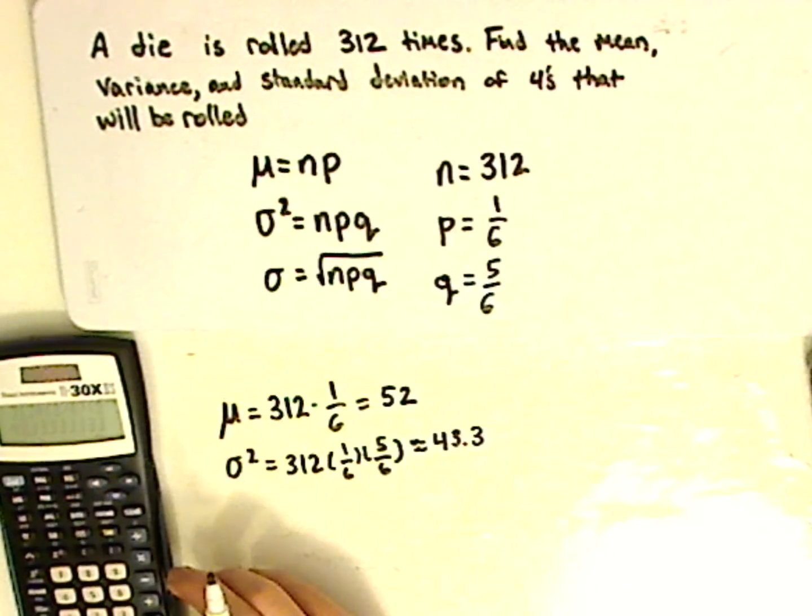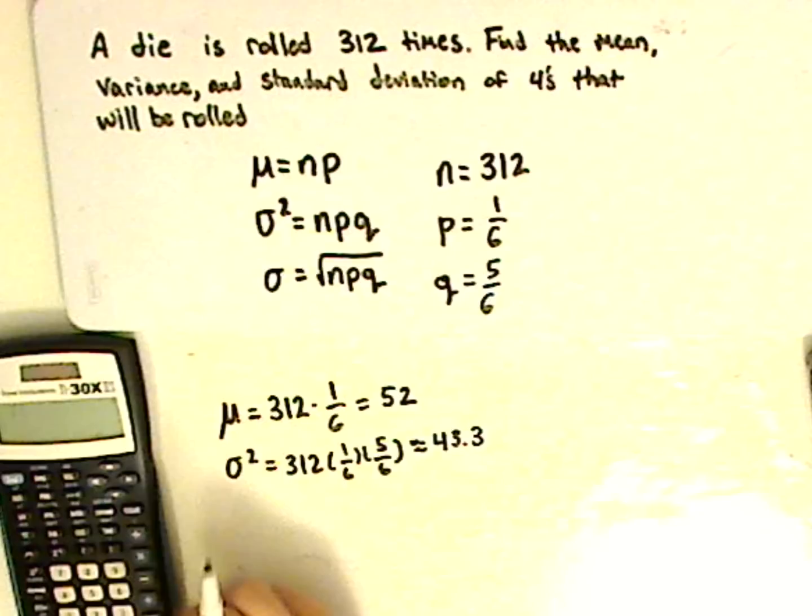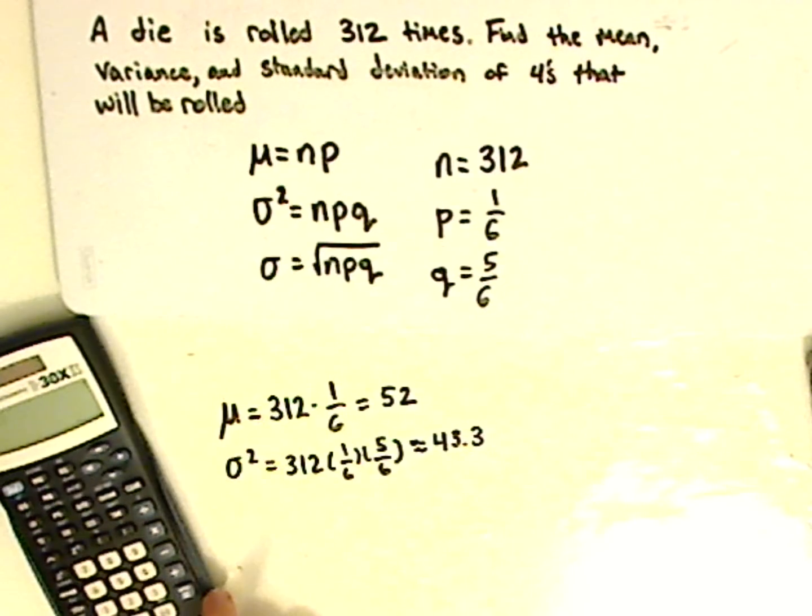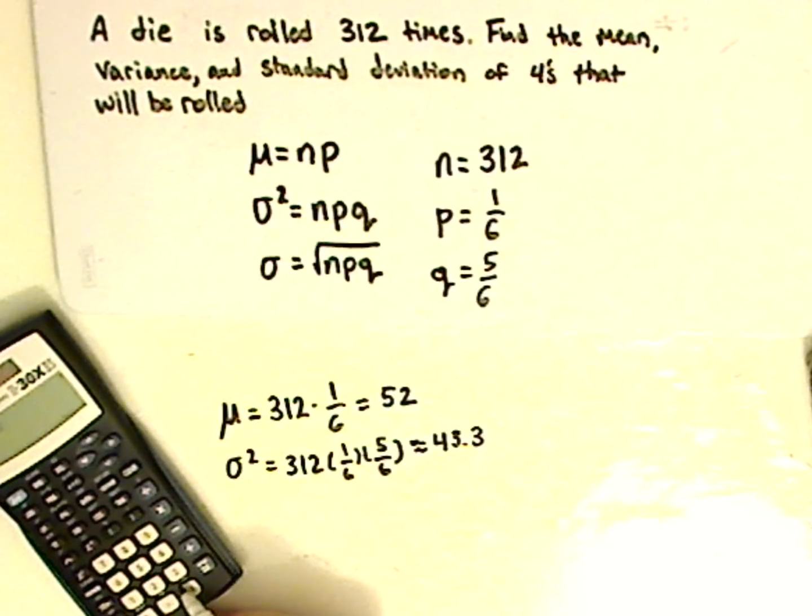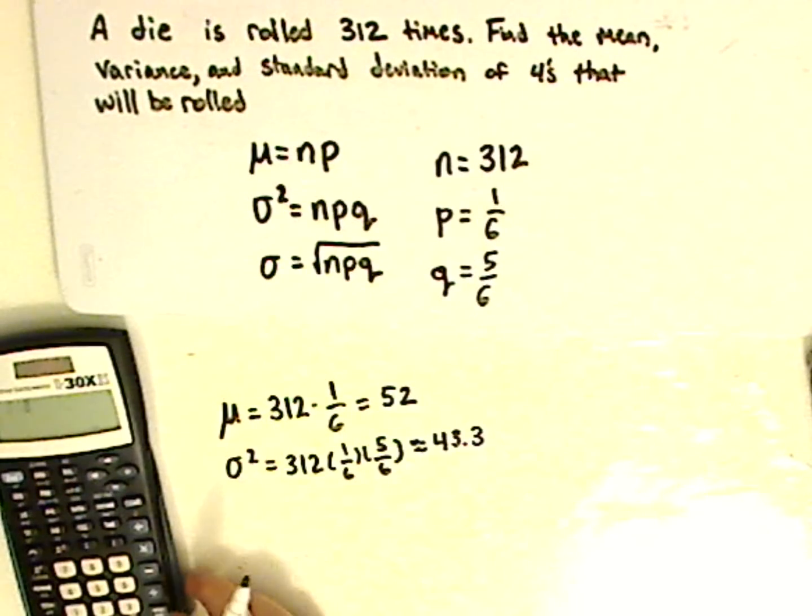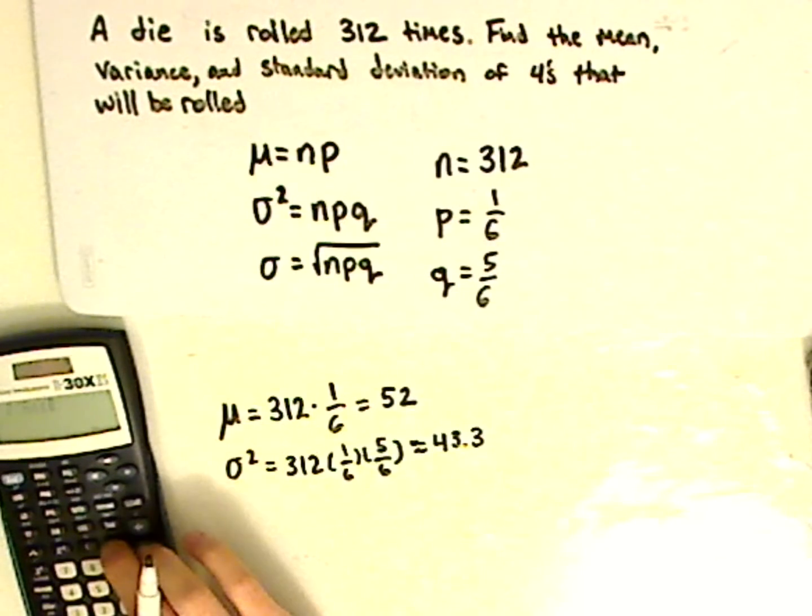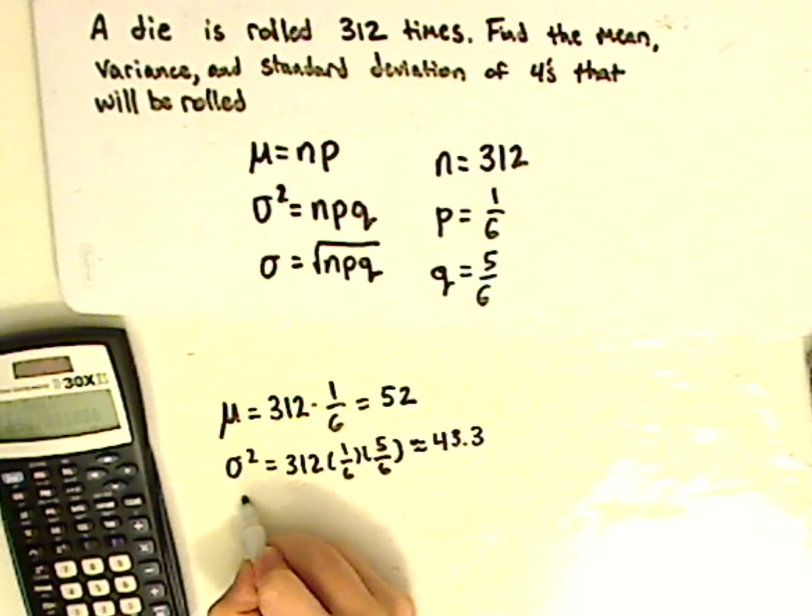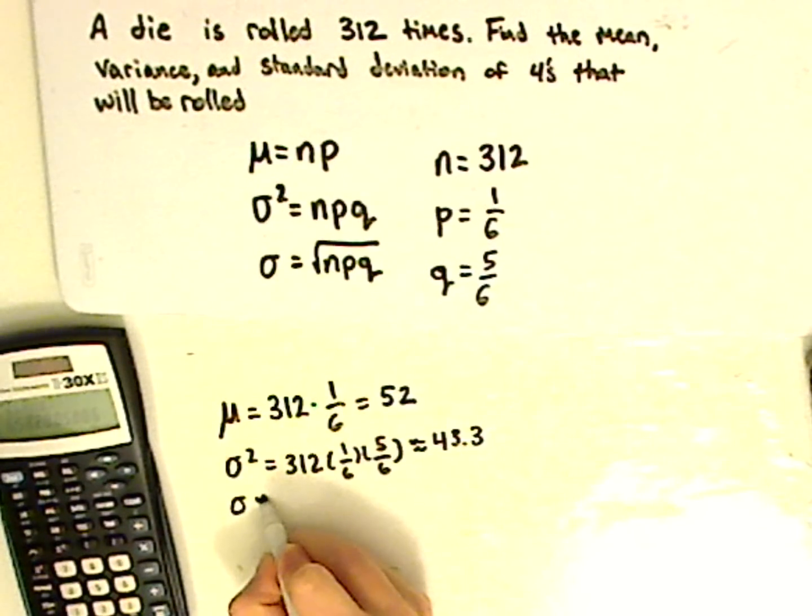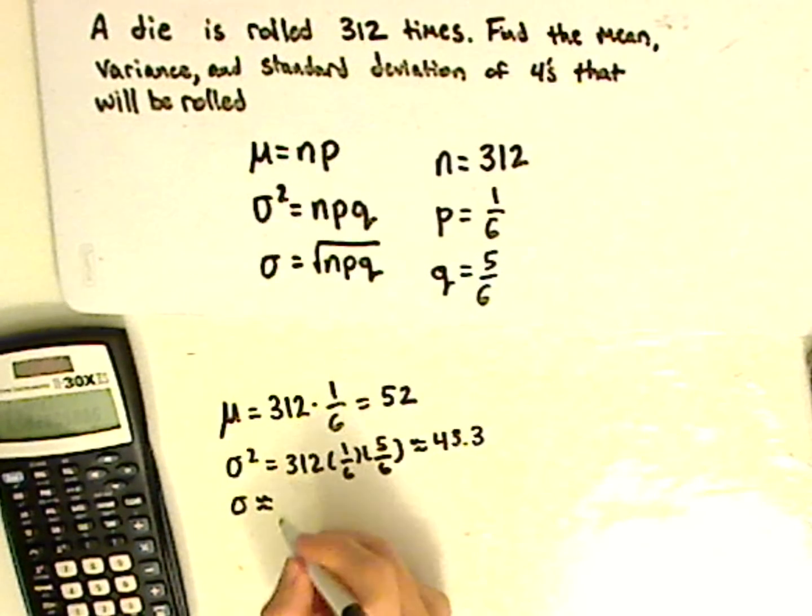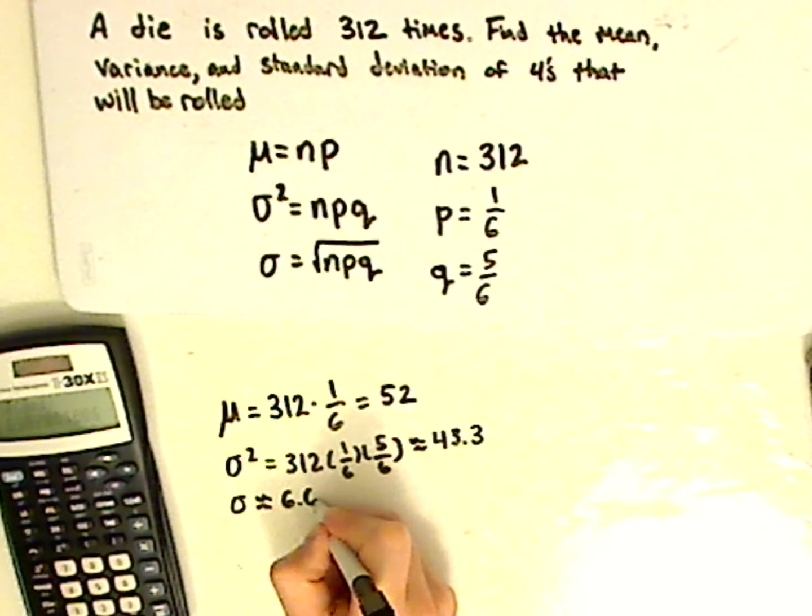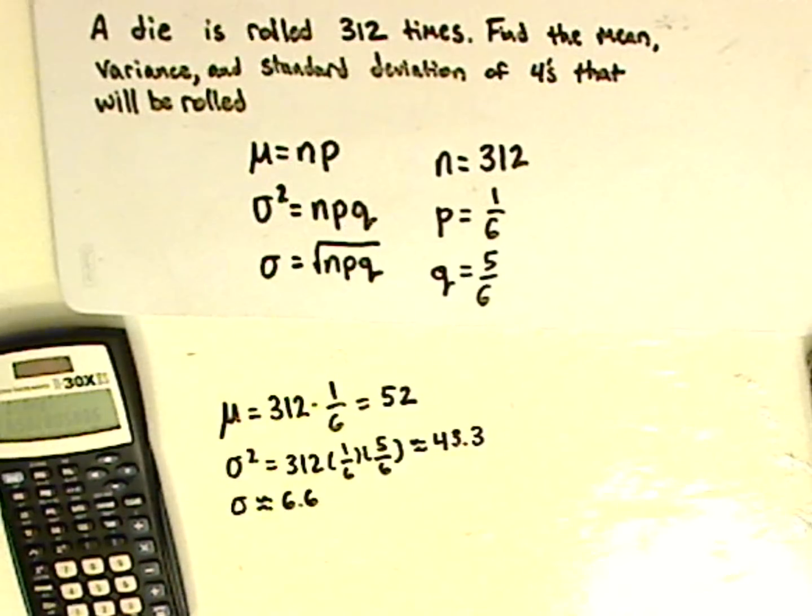Now what I'm going to do next is take the square root of the answer. And typically, on my calculator, you have ANS, which stands for answer. Let's push the second button. Close parentheses. And I get, for the standard deviation, approximately 6.6. And that's it.